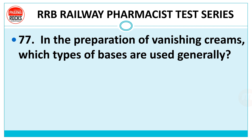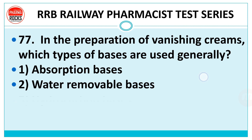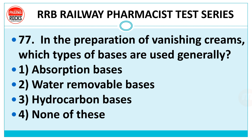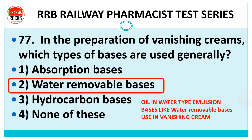Question 77: in preparation of vanishing creams, which type of bases are generally used — absorption, water removable, hydrocarbon, or none of these? The right answer is water removable bases. Water removable bases are oil-in-water type emulsion bases. They are used in vanishing cream because vanishing cream is of oil-in-water type, and oil-in-water type bases are water removable bases.